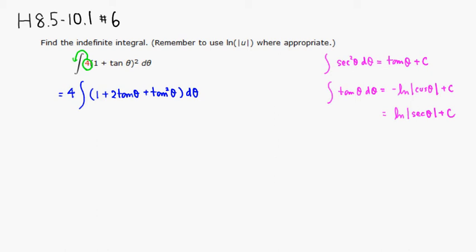Then we notice that one of the trig identities: 1 plus tangent squared is actually equal to secant squared of theta.